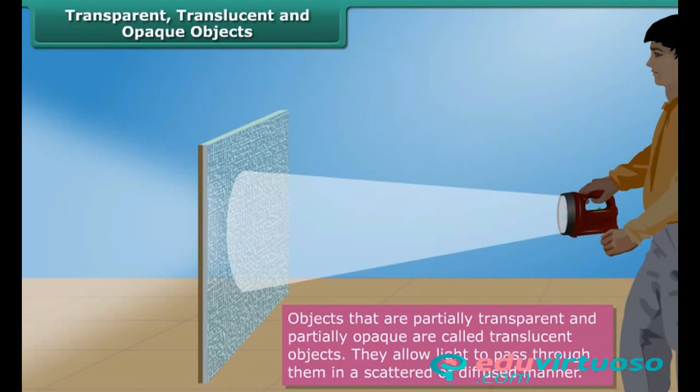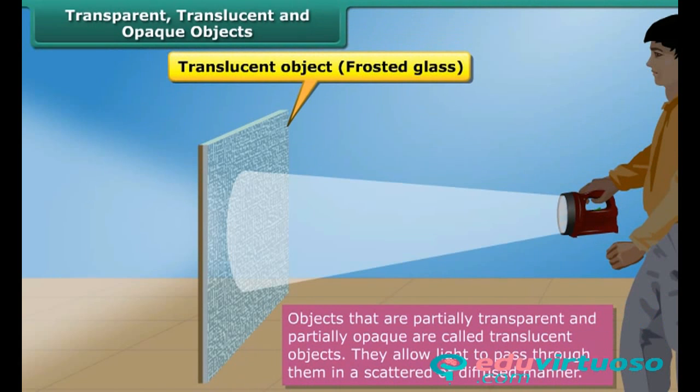Objects that are partially transparent and partially opaque are called translucent objects. They allow light to pass through them in a scattered or diffused manner. Frosted glass, tracing paper, and greased paper are examples of translucent objects.